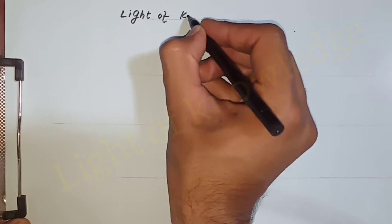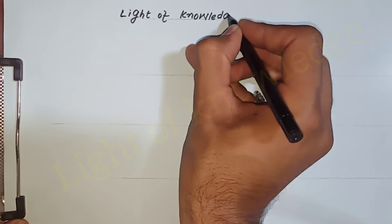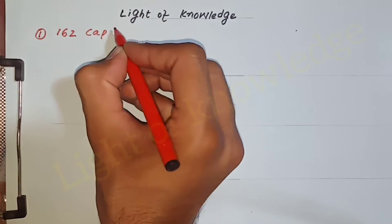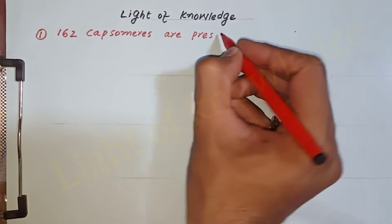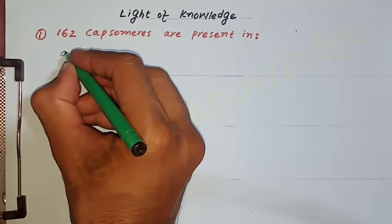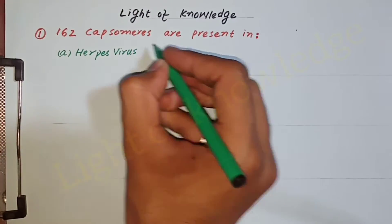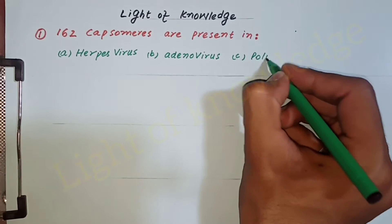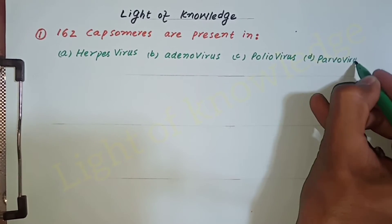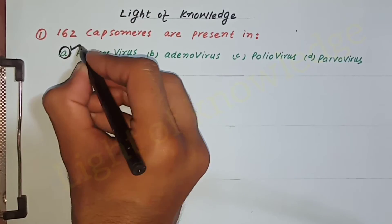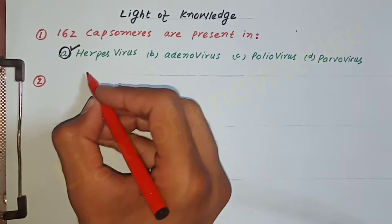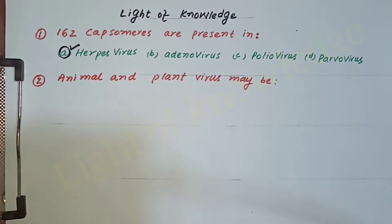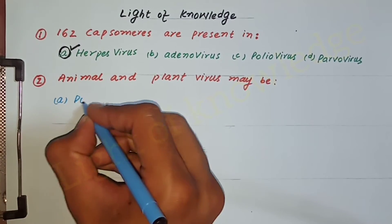Assalamu alaikum, welcome to Light of Knowledge MDCAT Biology. We will solve the viruses topic. Question number one: 162 capsomeres are present in which virus? Herpes virus, adenovirus, poliovirus, or parvovirus? The correct option is herpes virus.